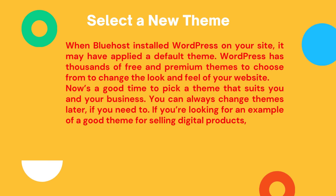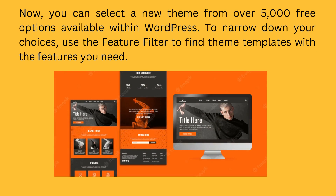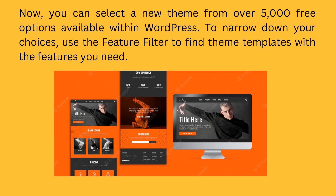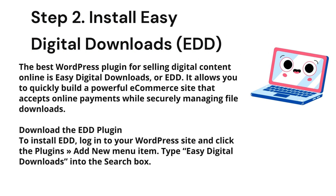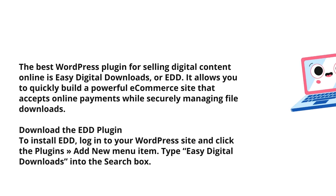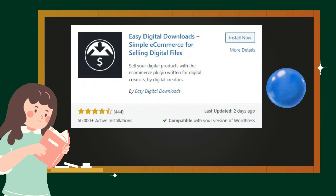Step 2: Install Easy Digital Downloads. With a WordPress site up and running, you're very close to being able to sell your digital media products. One of the best features of the WordPress platform is the huge number of plugins they offer. Plugins give non-programmers the ability to add just about any feature they might want to their sites. The best WordPress plugin for selling digital content online is Easy Digital Downloads. It allows you to quickly build a powerful e-commerce site that accepts online payments while securely managing file downloads. To install EDD, log in to your WordPress site and click the Plugins > Add New menu item, then type Easy Digital Downloads into the search box.